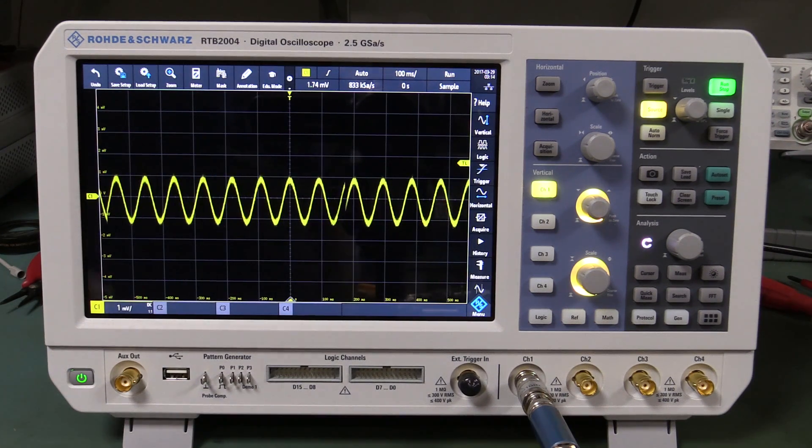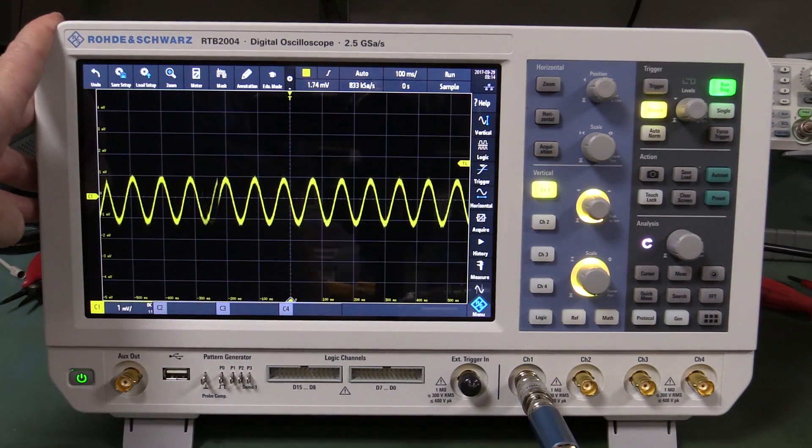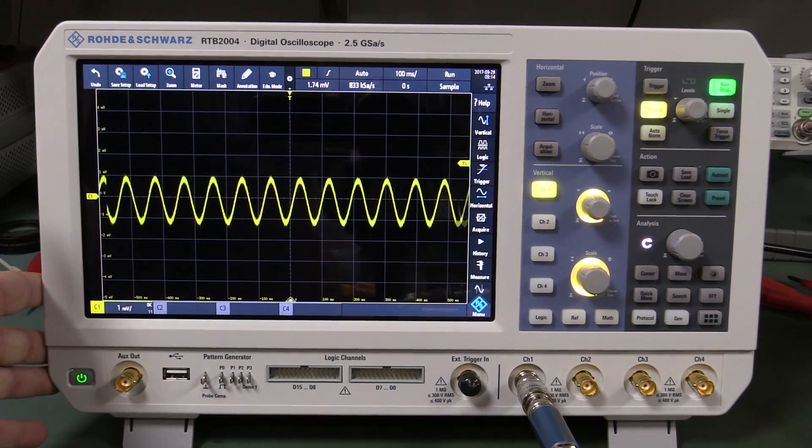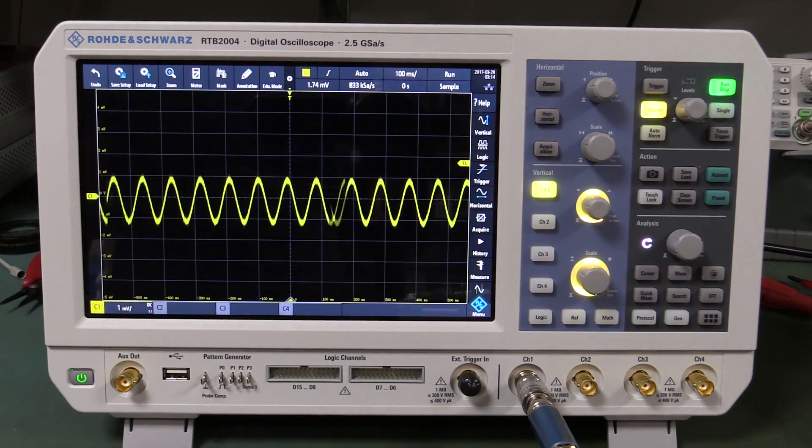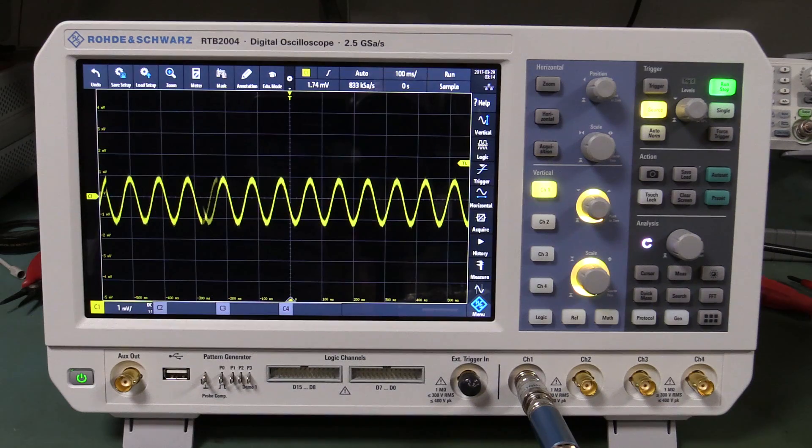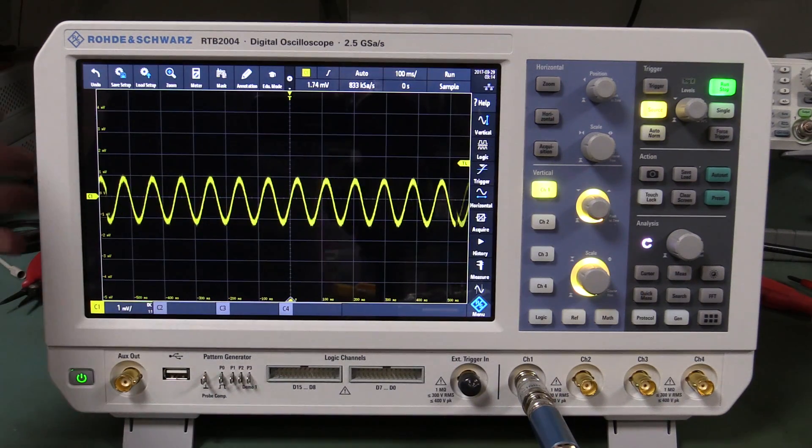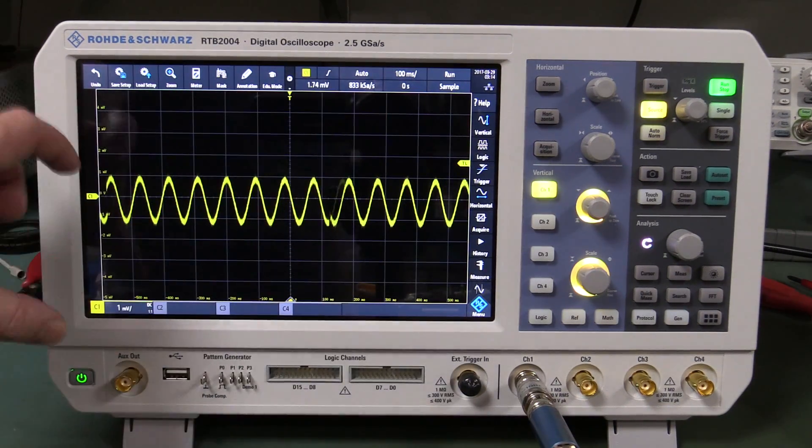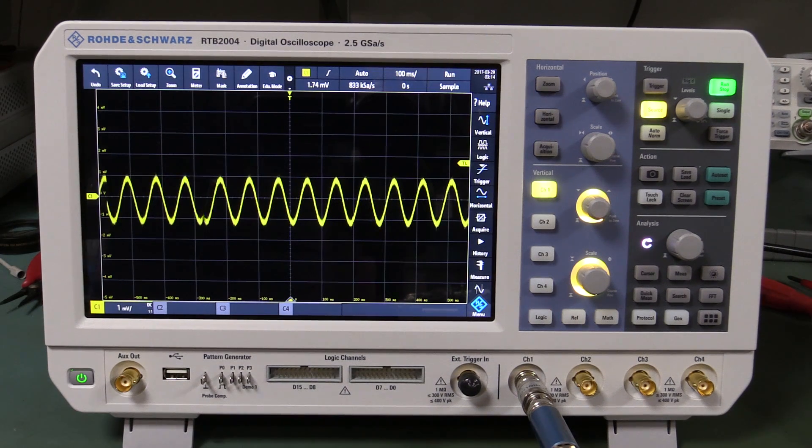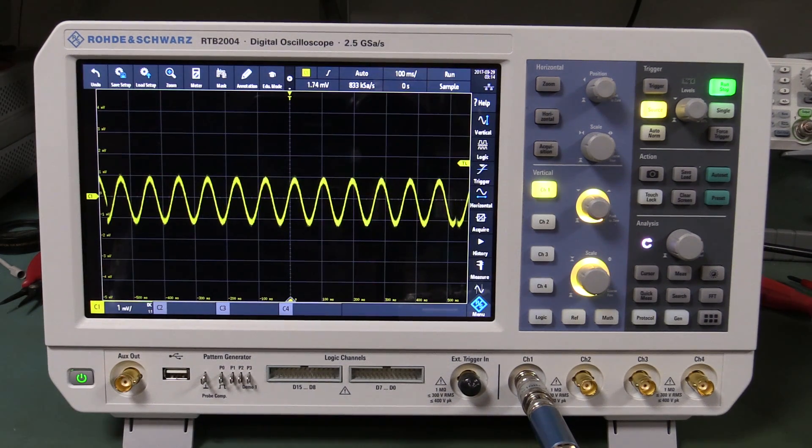Hi, just a quick one. I wanted to show you this Rohde & Schwarz RTB2004 oscilloscope and it is sexy as. 10-bit ADC in the thing and it's got all the bells and whistles, massive big high res touch screen, it looks really incredible.